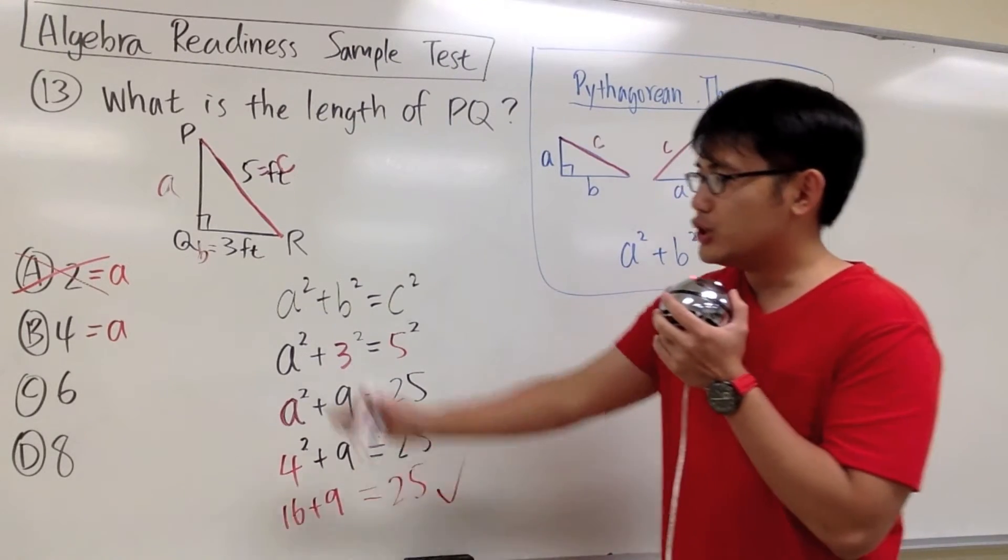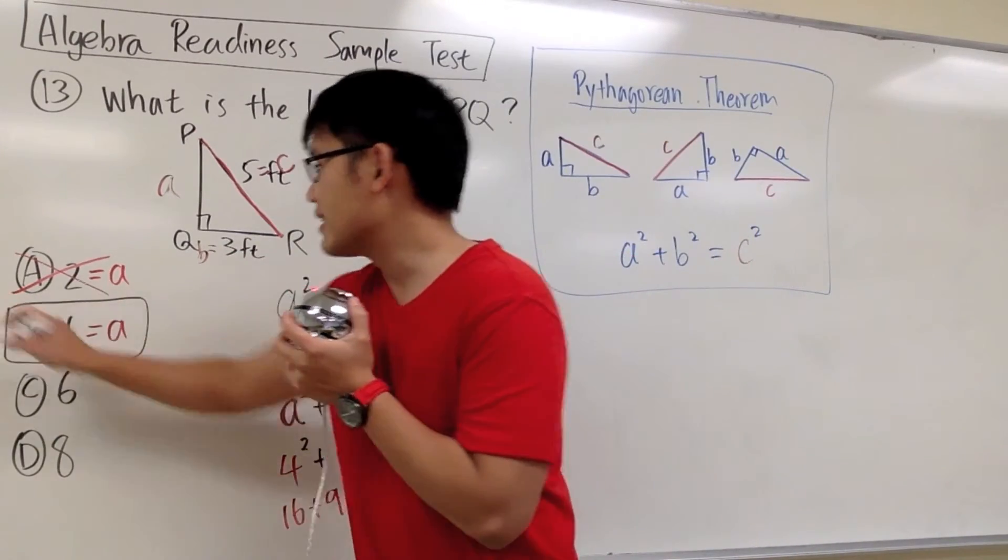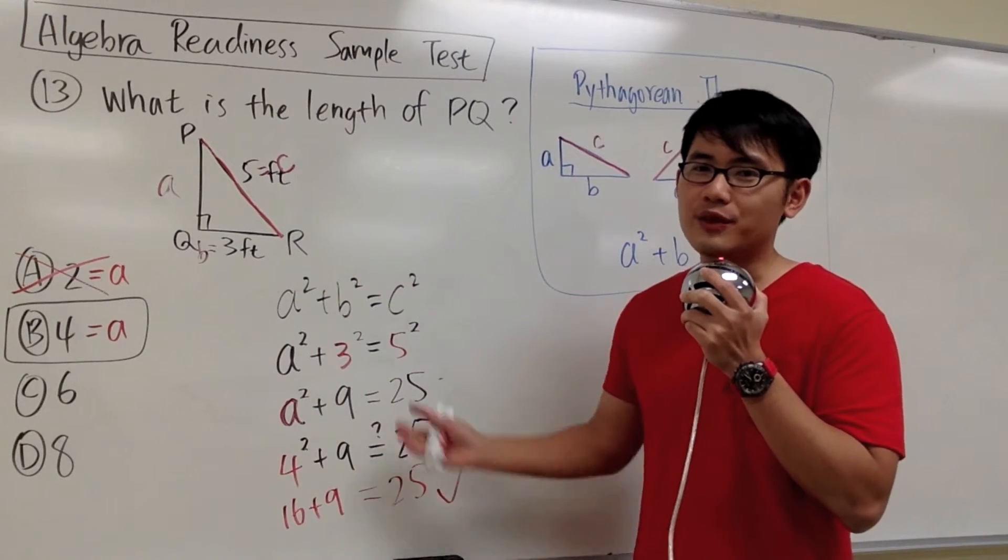So we know that choice B will be the answer to this question. That's how we can make good use of the answer choices to help us figure out the right answer for this question.